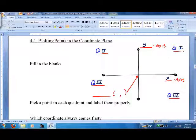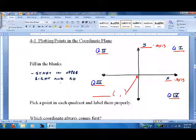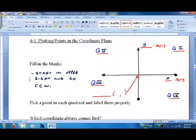For whatever reason, they always start in the upper right and they go counterclockwise. This is just the way it's always done. It doesn't always make sense, but that's the way it was done. And of course, we have a special point right here, the middle, called 0,0, which we call the origin.